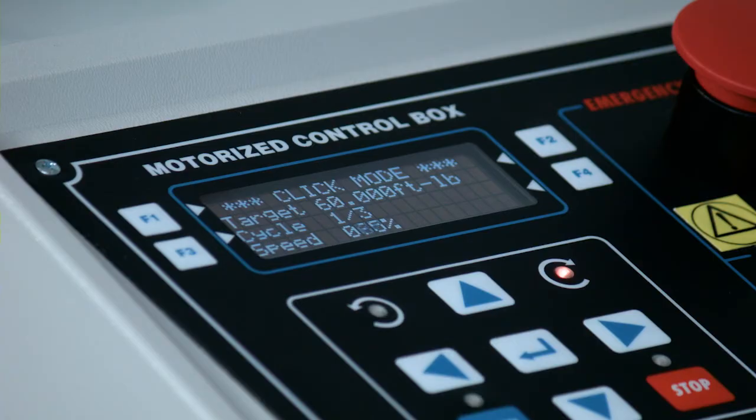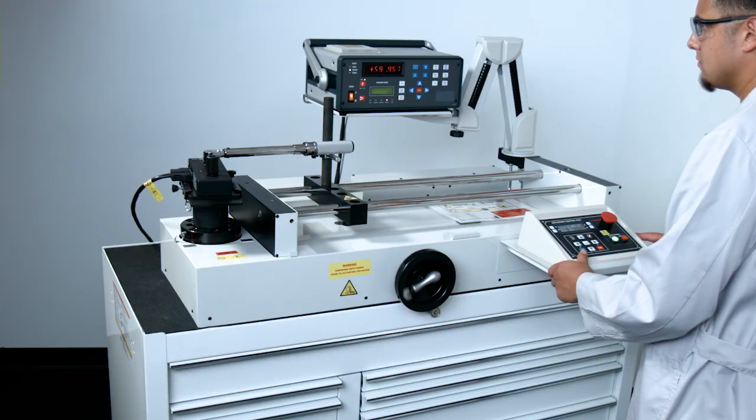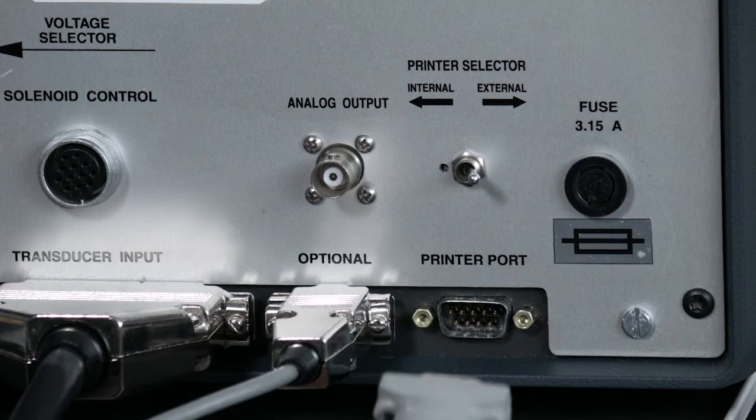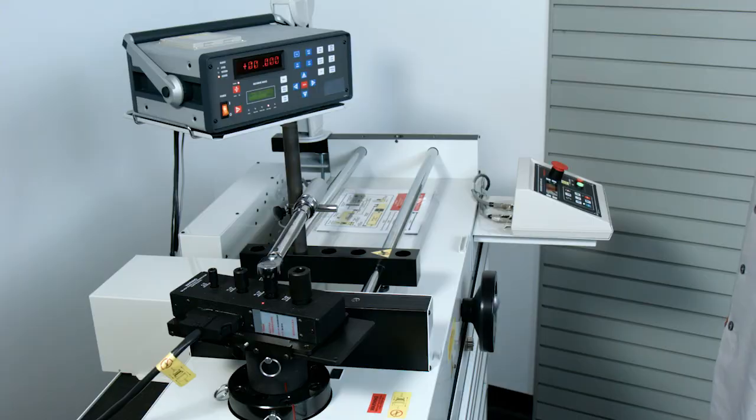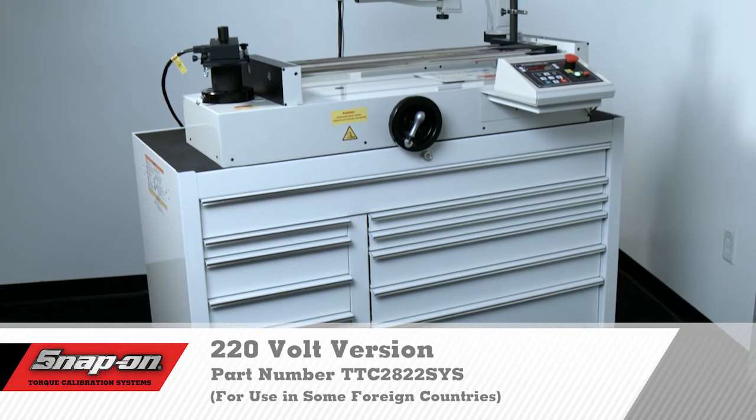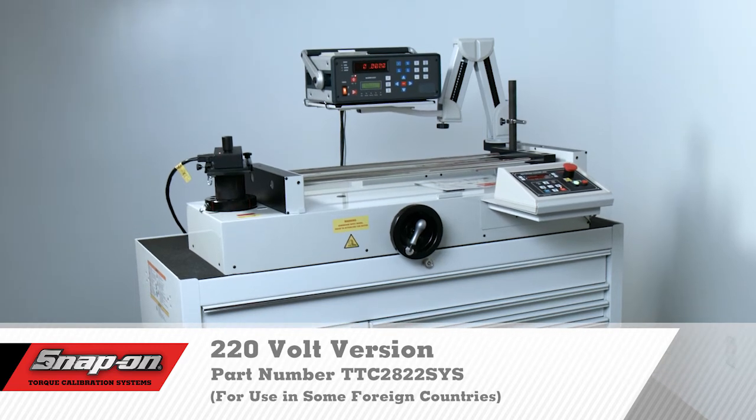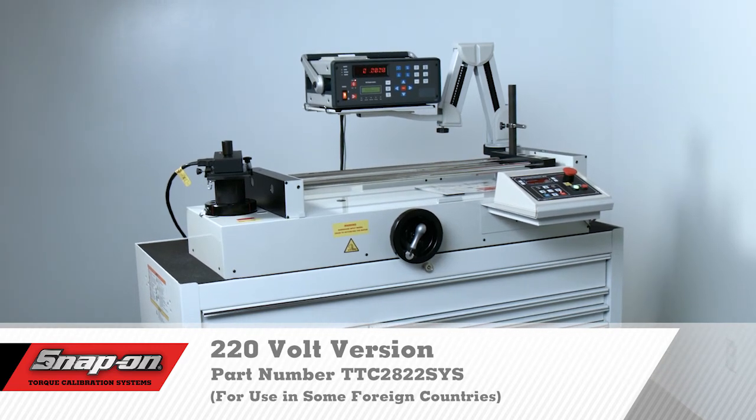The system operates in both the clockwise and counter-clockwise directions. Once all checkpoints have been reached, the stored data may be downloaded to a PC and used for printing torque calibration certifications. The motorized calibration system is also available in a 220-volt version, part number TTC-2822-SYS.